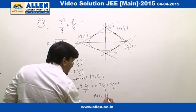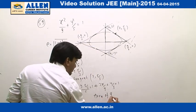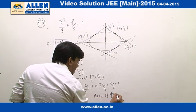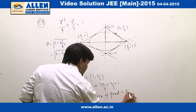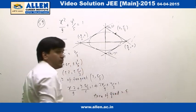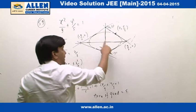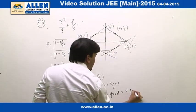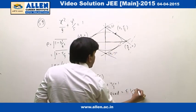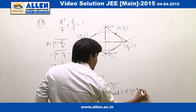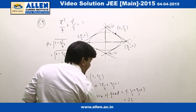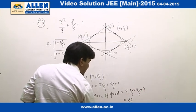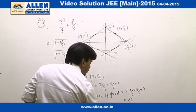The area of the quadrilateral equals 4 times the area of the triangle, which is 4 × (1/2 × 9/2 × 3) = 4 × 27/4 = 27. Hence the correct answer is 27.